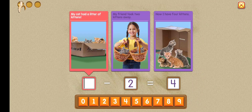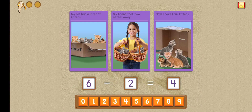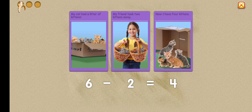Now, how many kittens were in the litter? Six. Six minus two equals four. Good job.